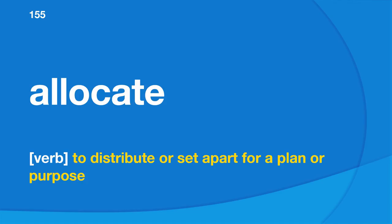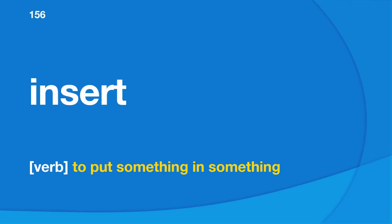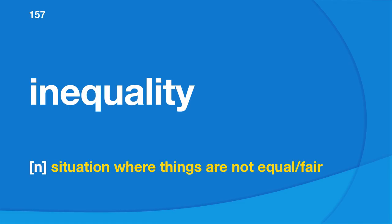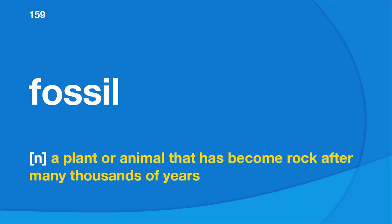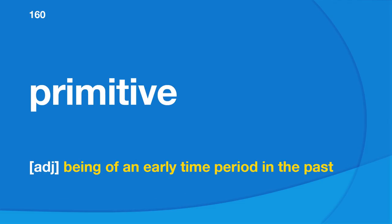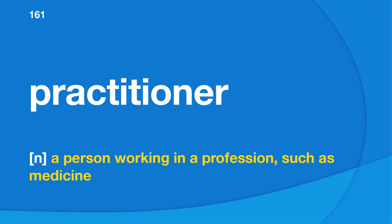Allocate: to distribute or set apart for a plan or purpose. Insert: to put something in something. Inequality: situation where things are not equal or fair. Approximation: something that is similar but not an exact copy. Fossil: a plant or animal that has become rock after many thousands of years. Primitive: being of an early time period in the past. Practitioner: a person working in a profession, such as medicine. Randomize: to arrange in a random order.